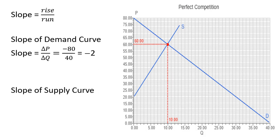The slope of the supply curve: going from P equals 20 to P equals 60 is a 40-unit increase, and from Q equals 0 to Q equals 10 is a 10-unit increase. So the slope of the supply curve is 4.